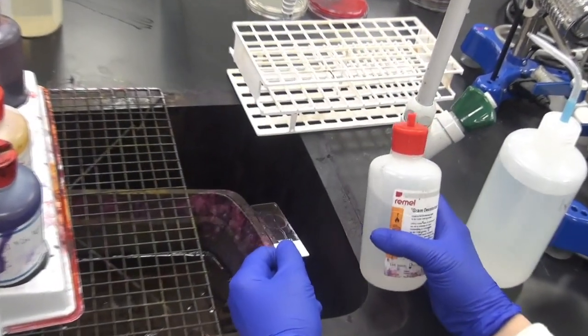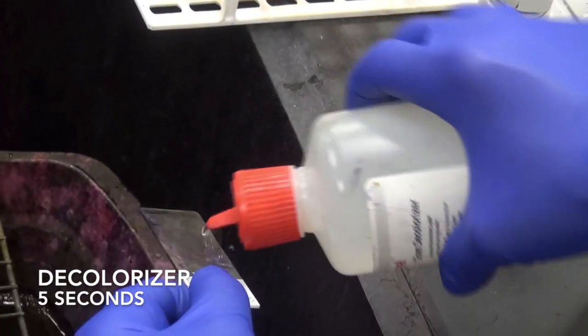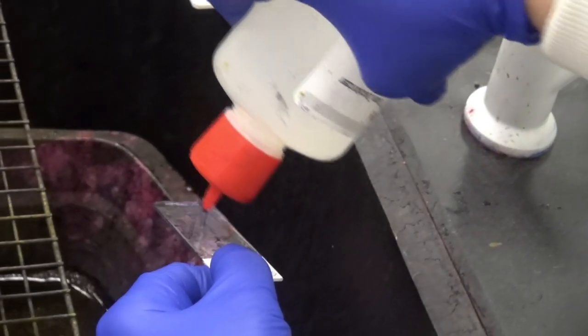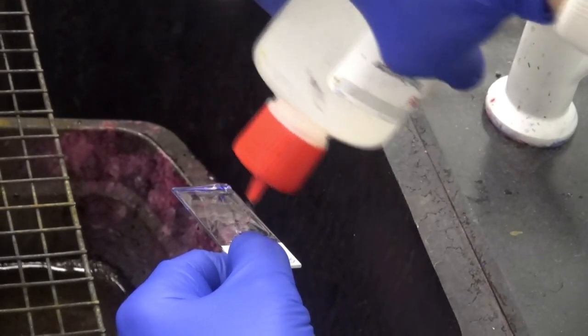The decolorizing step is third and is performed by dripping the alcohol-acetone mixture onto the slide until the color runs clear.